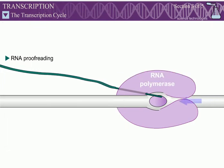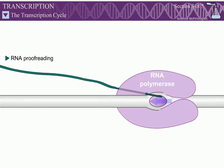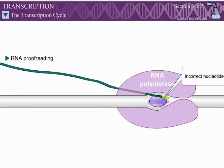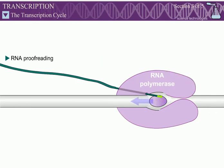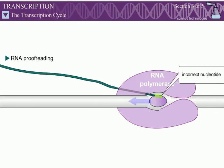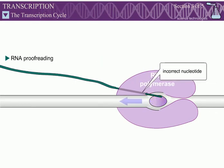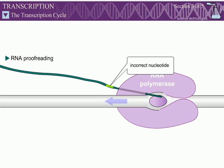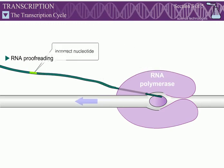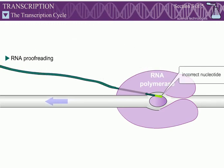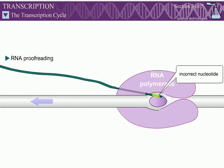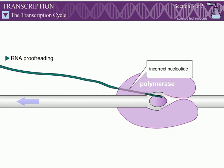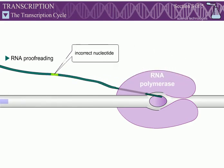The proofreading activity of RNA polymerase is less efficient than that of DNA polymerase. While the proofreading activity of DNA polymerase only allows about 1 mistake per 10 million nucleotides, the proofreading activity of RNA polymerase allows about 1 mistake per 10,000 nucleotides.